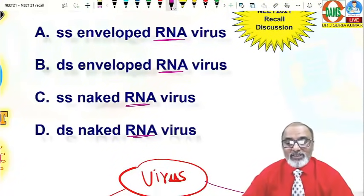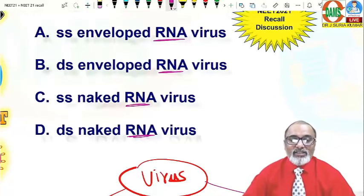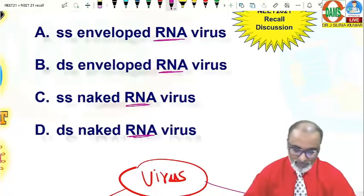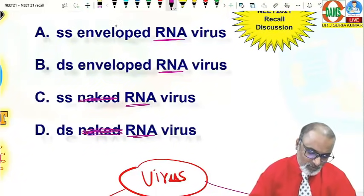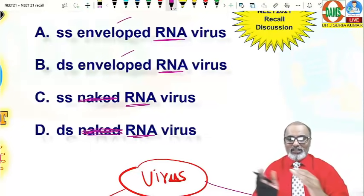So, that will help. Suppose the DNA virus, you can easily eliminate the choice. Is it enveloped or non-enveloped? It is enveloped. So, I can remove naked. These two possibilities. So, now my probability is 50%. You need to narrow like this.